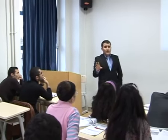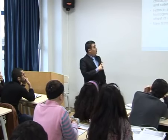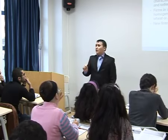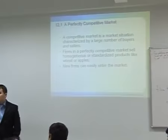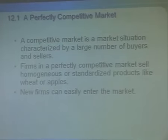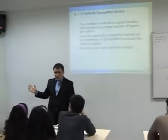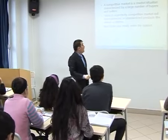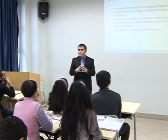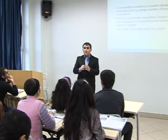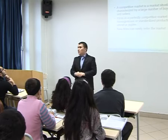When we talk about the perfectly competitive market, we mention three plus one more feature. The very first feature is that there will be a large number of buyers and sellers. Second, there will be homogeneous products. Homogeneous products means identical products — there is no difference between the products.